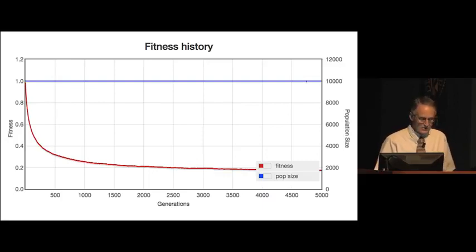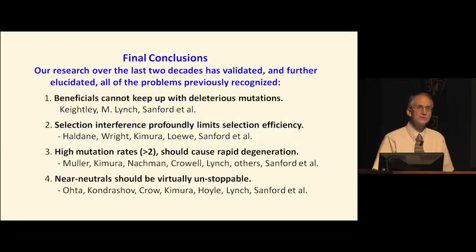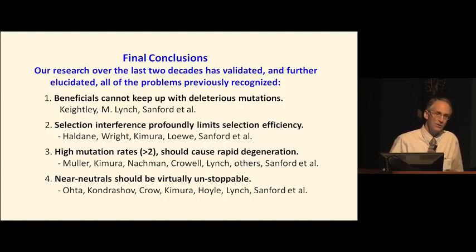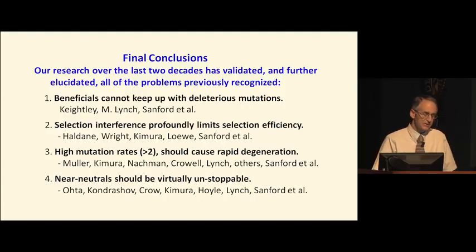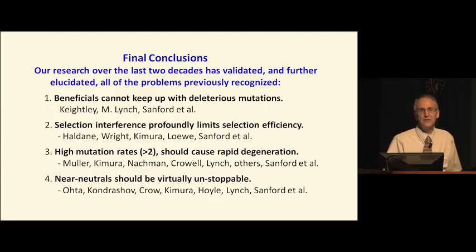In conclusion: even if the deleterious mutation rate were less than 1, the near-neutral problem should very gradually cause the human genome to rust out and degenerate. Our research over the last almost two decades has validated and further elucidated all of the problems already well-known within the field of population genetics. To review the four points: beneficial mutations cannot keep up with deleterious mutations; selection interference profoundly limits selection efficiency; high mutation rates — anything above 2 — should cause rapid degeneration; and near-neutral mutations should be virtually unstoppable. That's the summation of the last 18 years of my research, consistent with the history of population genetics starting from the founders of neo-Darwinian theory.